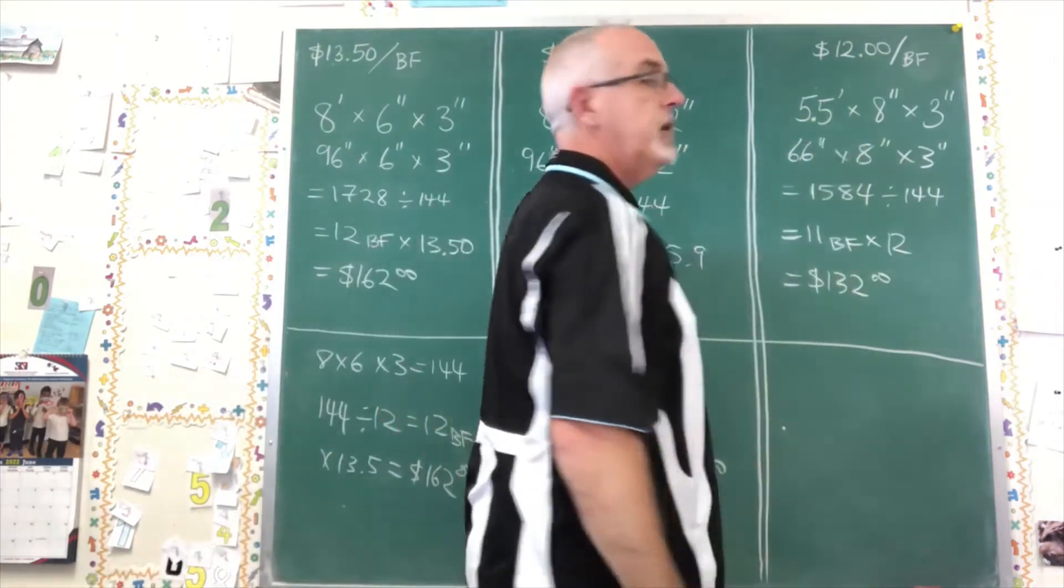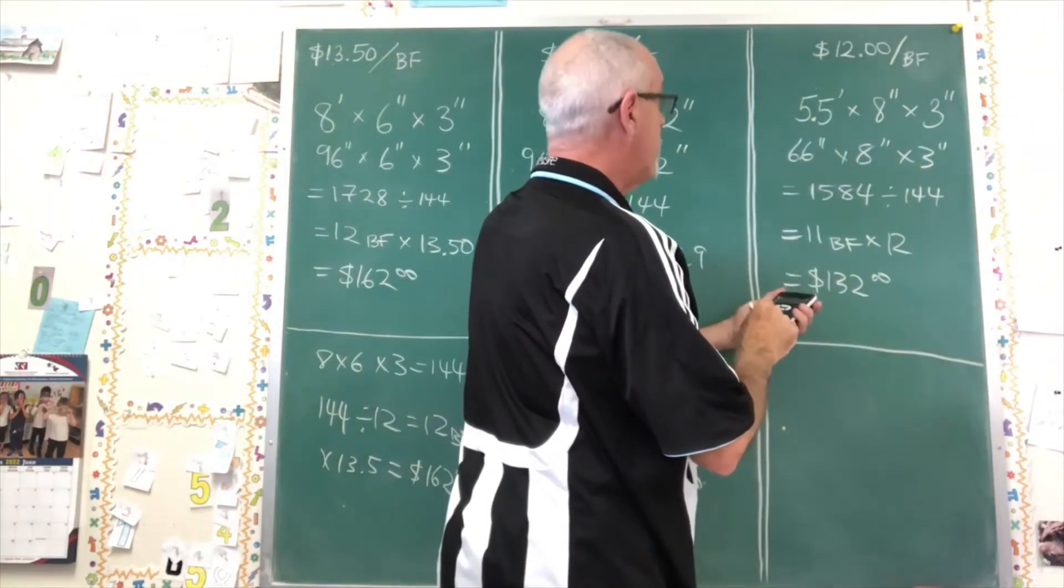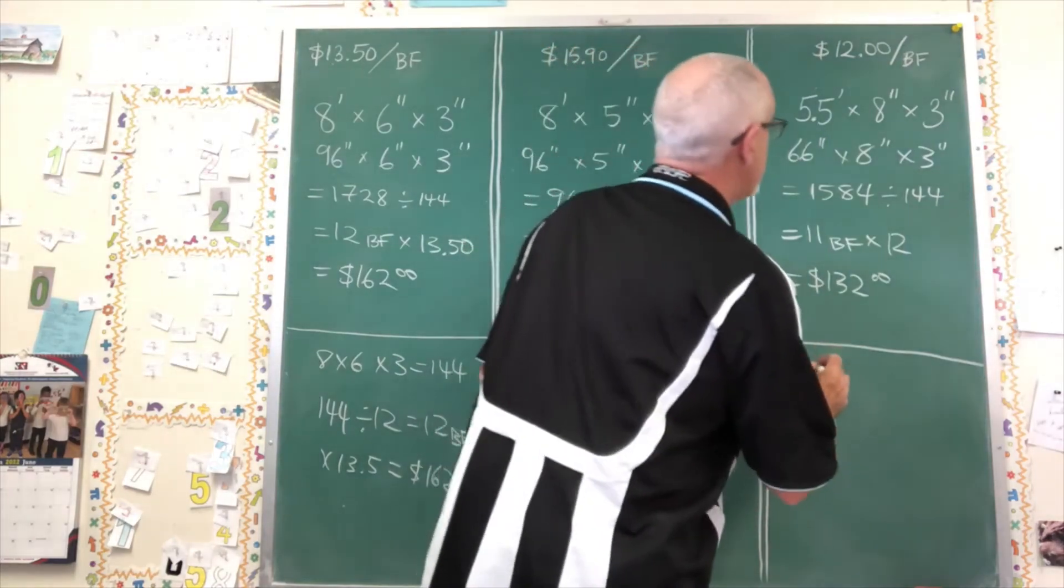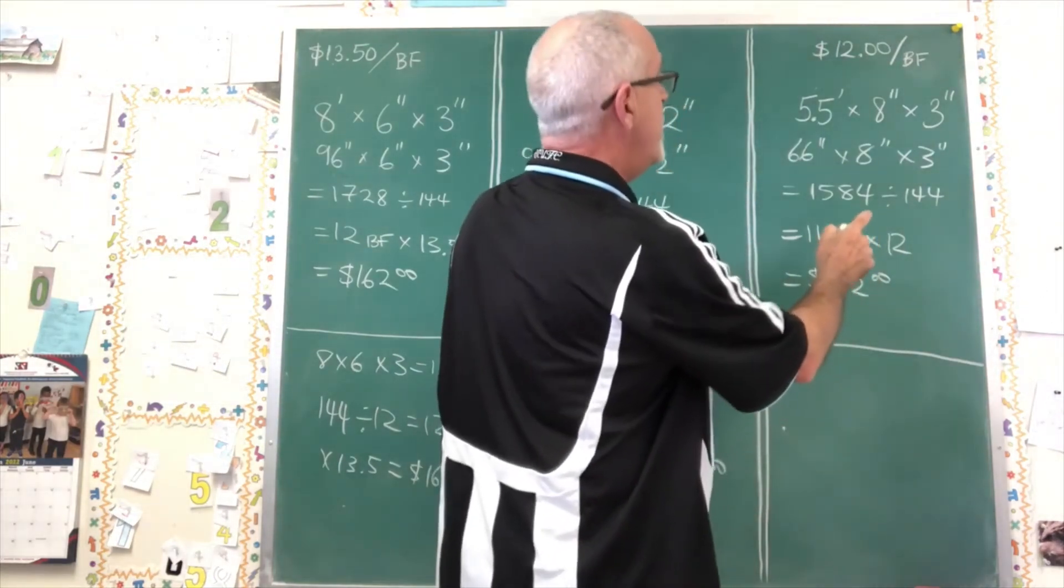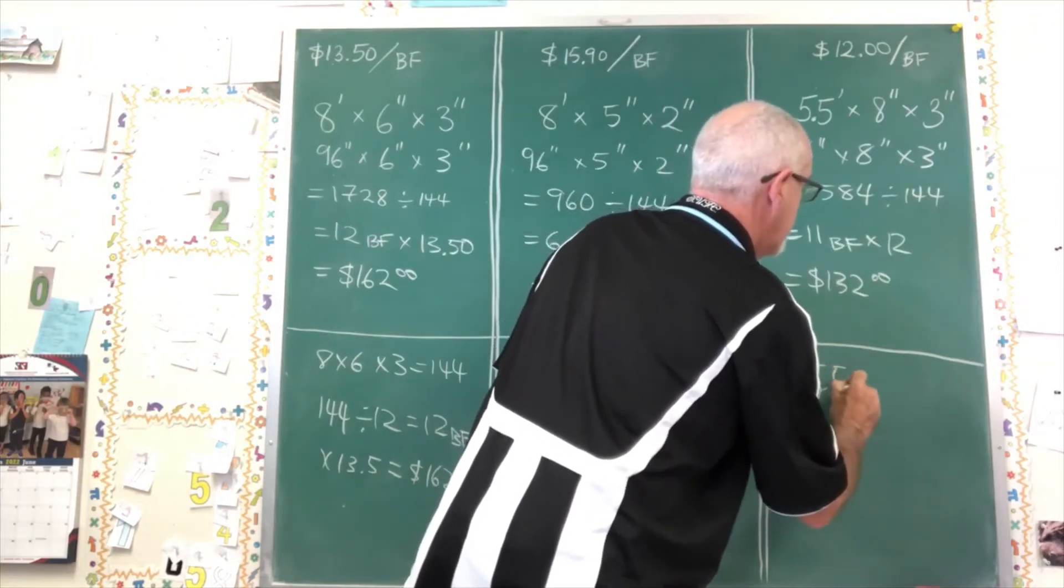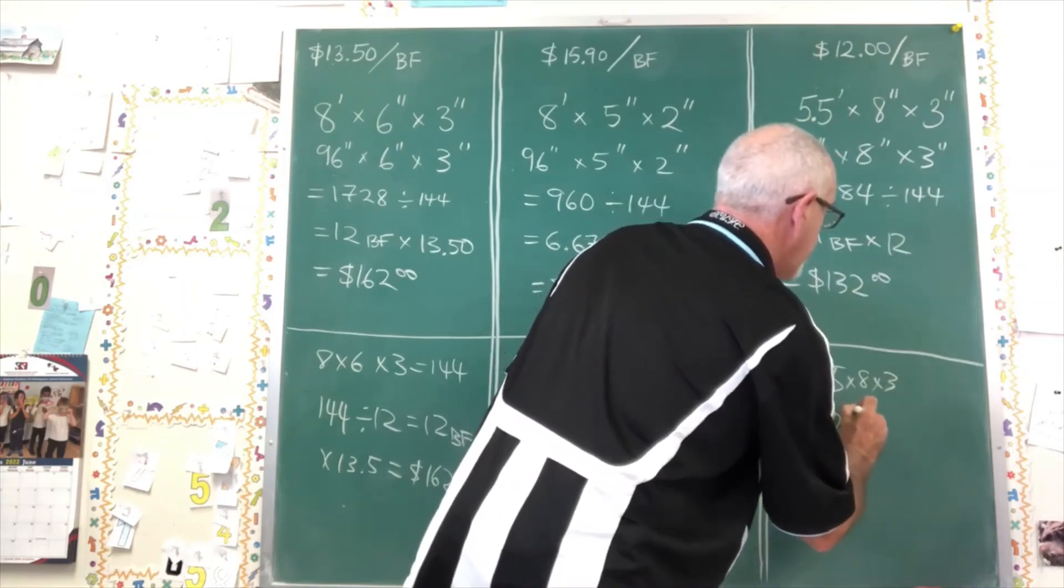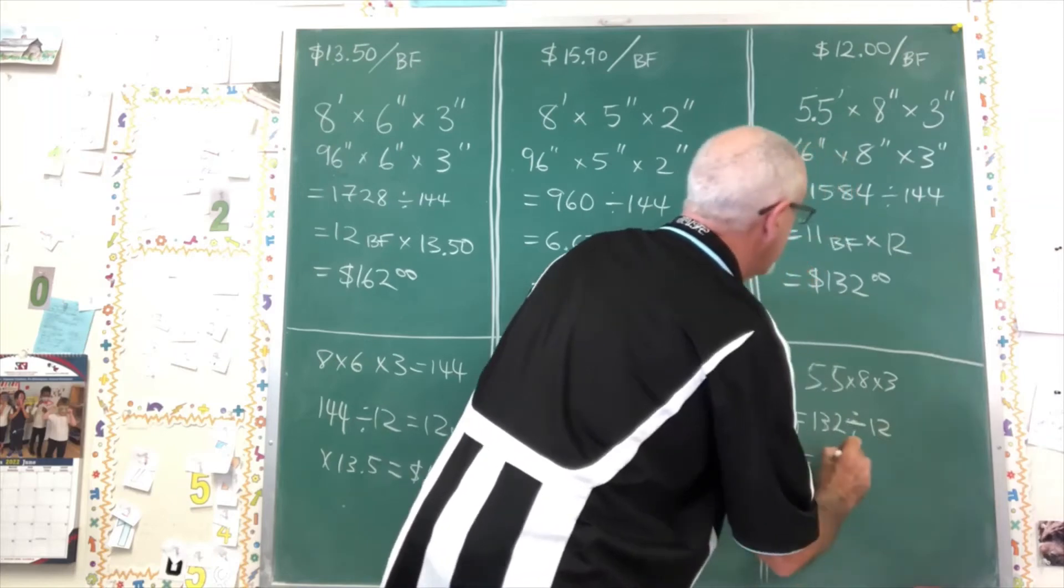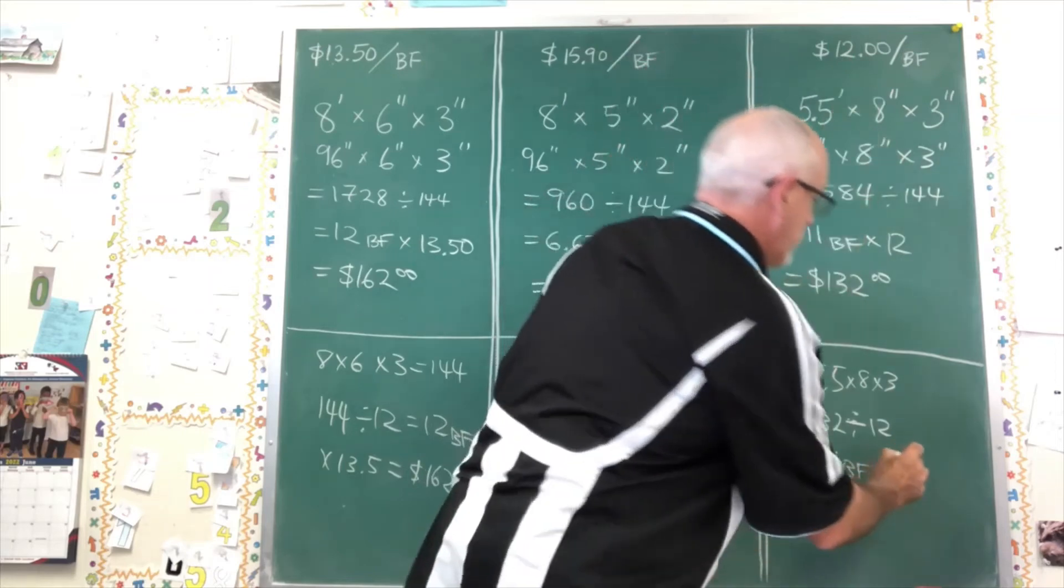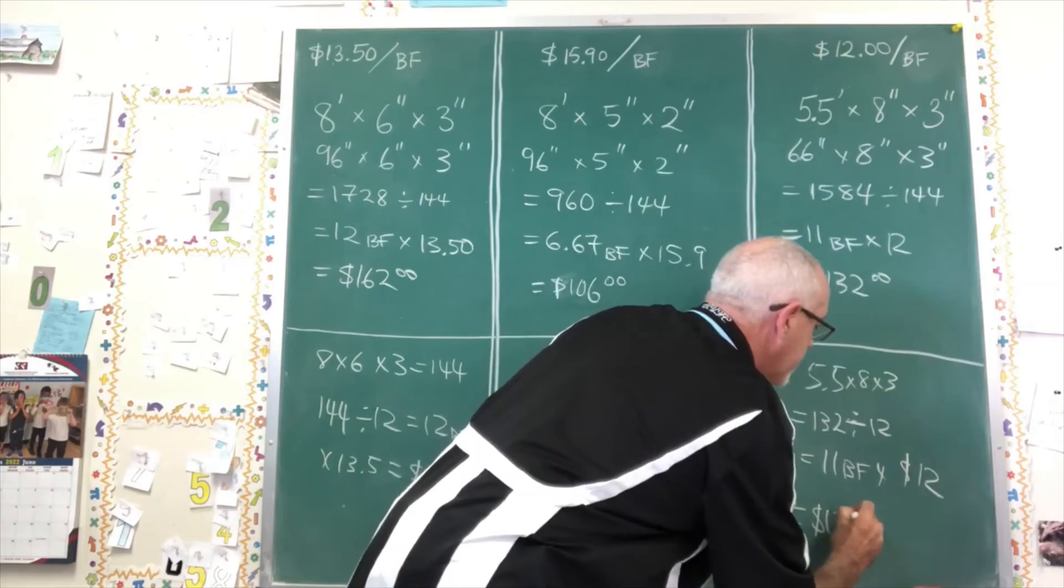Here we have 5.5 times 8 times 3. The decimal is going to make it a little more tricky. 5.5 times 8 times 3, 132. So I'm getting the 132 and I'm dividing that by 12. 5.5 times 8 times 3 equals 132 divided by 12 is giving me exactly 11 board feet. Multiply that by the $12 price and I back up to $132, which we all knew was going to be the right answer.